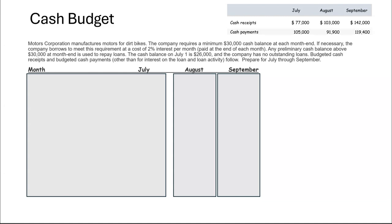Motors Company manufactures dirt bikes. They like to have a minimum of $30,000 at the end of each month. If necessary, the company will borrow — probably through a line of credit — and they pay 2% per month, which is expensive; that's 12% a year. Any preliminary cash balance above $30,000 at month end is used to repay what they've borrowed. The cash balance was $26,000 in July and they didn't owe any money, so the budgeted cash receipts and budgeted cash payments are prepared as follows.